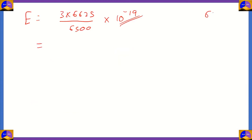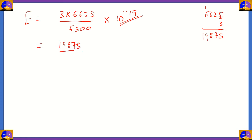First, multiply 6625 × 3: 5 × 3 = 15, carry 1; 2 × 3 = 6, plus 1 = 7; 6 × 3 = 18, carry 1; 6 × 3 = 18, plus 1 = 19. So 6625 × 3 = 19875. Therefore we need 19875 ÷ 6500 × 10^(−19).